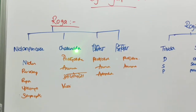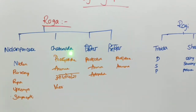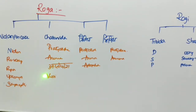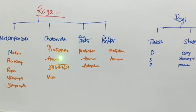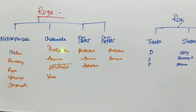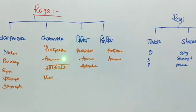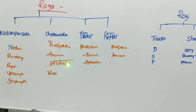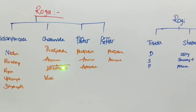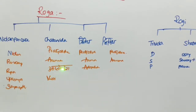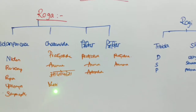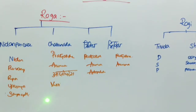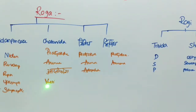Cheturvidha Pariksha means four types of tools used for Roga Pariksha: Pratyaksha, Anumana, Aptopadesha, and Yukti. Pratyaksha means by direct examination. Anumana means by inference — by doubt we can infer the disease. Aptopadesha means through Shastra Vachana and references from books. Yukti applies when encountering something new, where based on our intelligence we correlate or name the new condition.